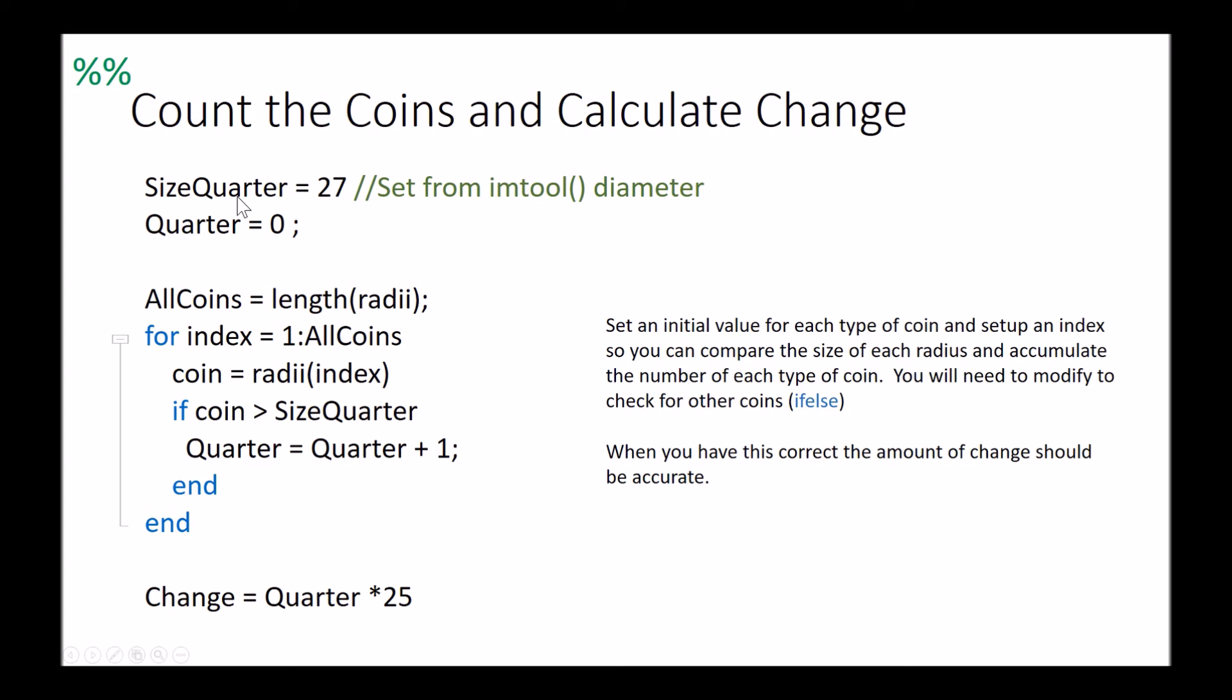I can then go in and I can start looking for the size of my coins. I've got size of quarter equals 27, so that is the radius of the diameter that I got from the imtool. I've got my quarter set to zero. I'm going to go into all coins equals length of radii, and then for index we're going to bring in one to however many coins are counted within my radii.